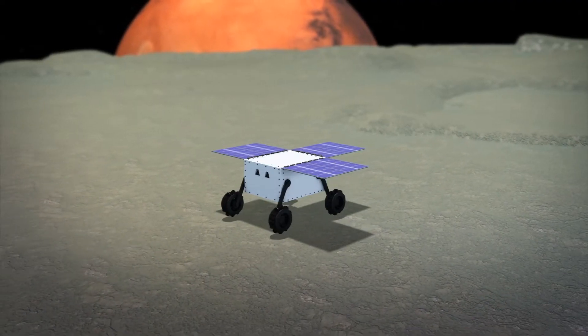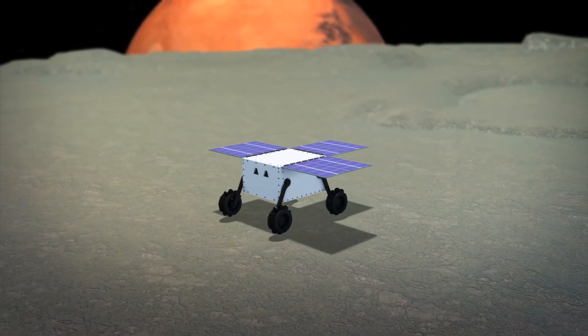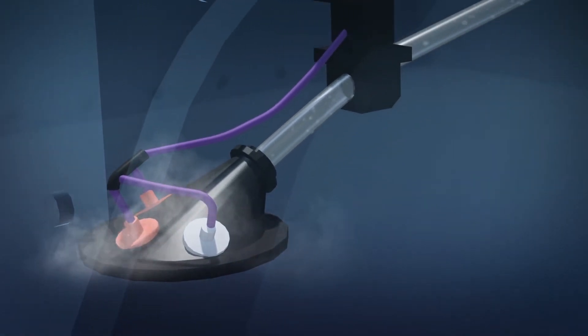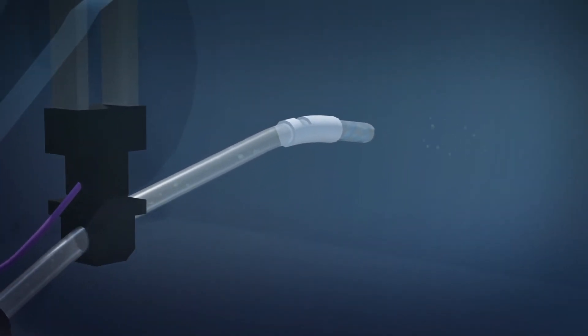The MMX will also land on Phobos and send out a small rover. The vehicle will use its equipped geological core sampler and dig two centimeters deep into the dust to retrieve samples weighing 10 grams.